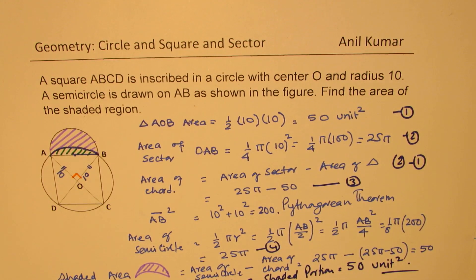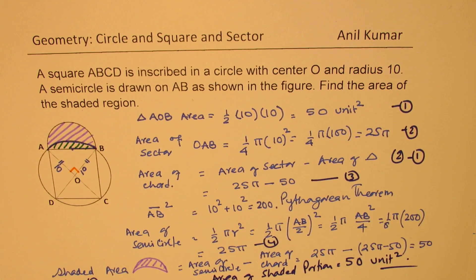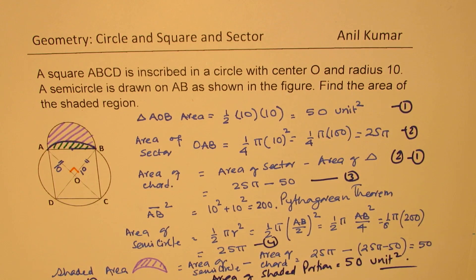So we now know that the area of the shaded portion equals to 50 units squared. Is that clear to you? So that is how we solve this particular question. So I hope these steps are absolutely clear.